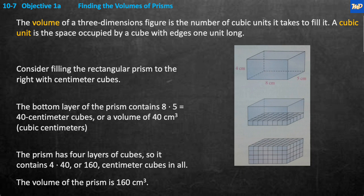A cubic unit is the space occupied by a cube with edges one unit long. Consider filling the rectangular prism to the right with centimeter cubes. These little cubes I'll point to—this little cube right here is one centimeter by one centimeter by one centimeter. That's a little one centimeter cube. It could be miles, feet, yards. This one happens to be centimeters.